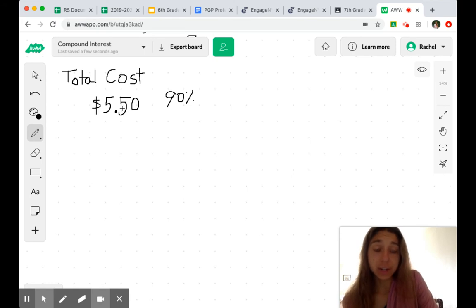We need to determine what 90% of $5.50 is. We can represent 90% as the decimal 0.9, and to find 90% of $5.50 we can multiply that 0.9 by $5.50. So if you take a moment and do that, that will get you to $4.95.